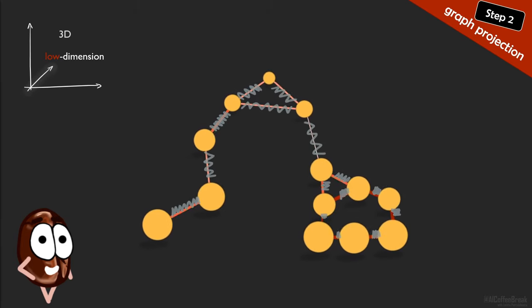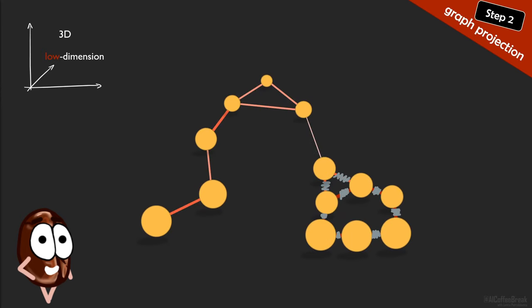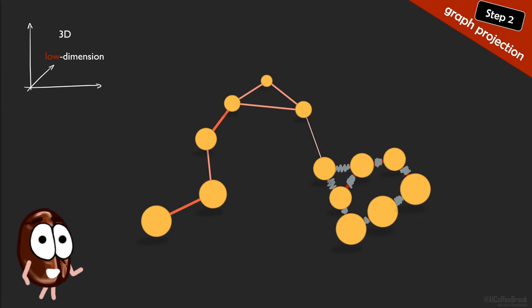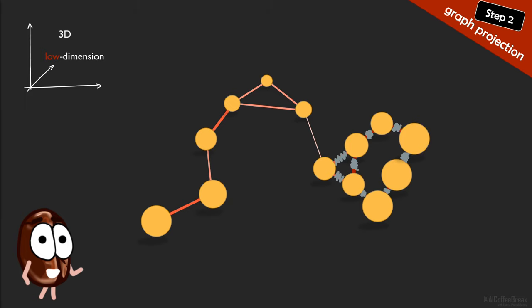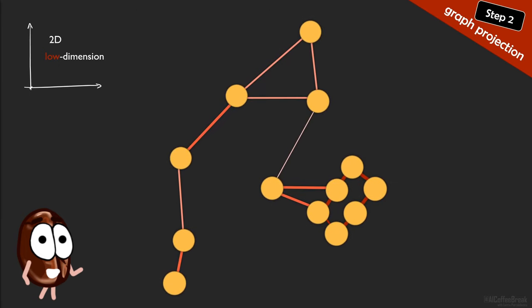And perhaps interesting to notice is that these spring forces are rotationally symmetric, which leads to clusters sometimes landing on one side after one UMAP run and on the other side after another projection.